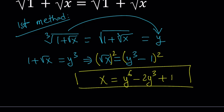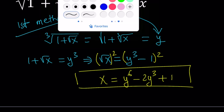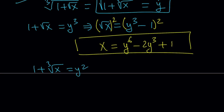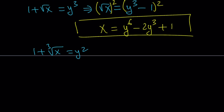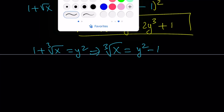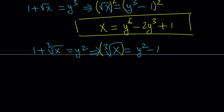Now we're going to do the same thing with the square root. With the square root equation, if you square both sides, you're going to get 1 plus the cube root of x equals y squared. If you isolate cube root of x, you get y squared minus 1. And at this point, go ahead and cube both sides — not square, because we have a cube root, so you have to raise both sides to the third power. That gives us x equals y to the 6th minus 3y to the 4th plus 3y squared minus 1.